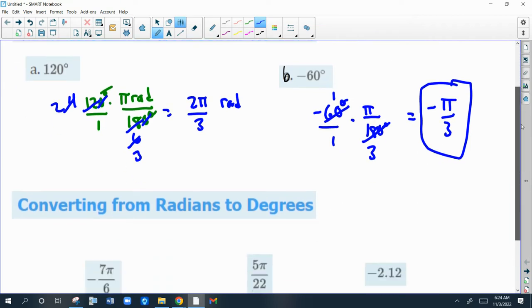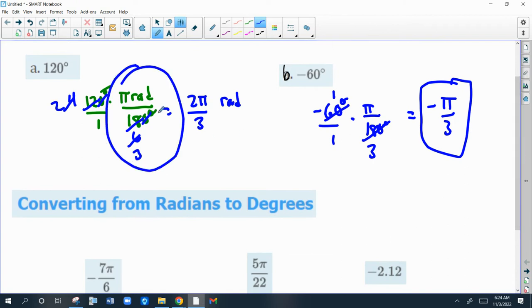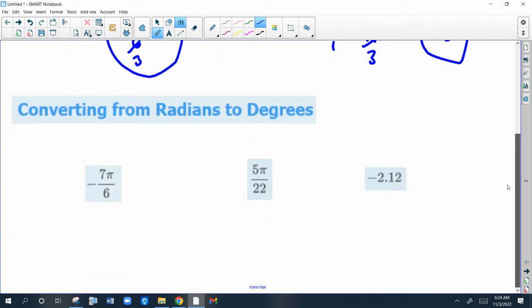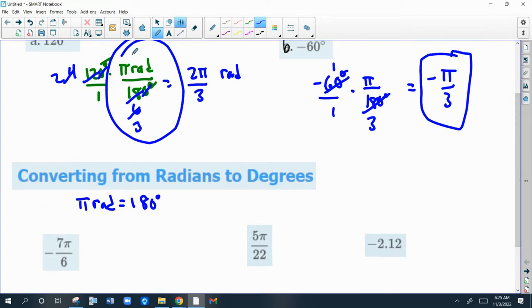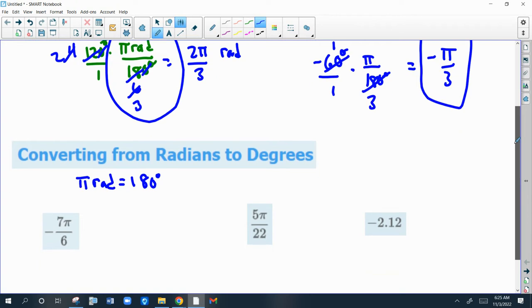Now to go the other way, radians to degrees, you're going to use that same conversion factor, but you're going to flip it. Or, and this is even easier, if pi radians equals 180, you can make that substitution. So if your angle has a pi in it, you can just make that substitution. If your angle doesn't have a pi in it, you're going to have to multiply it by the conversion factor.